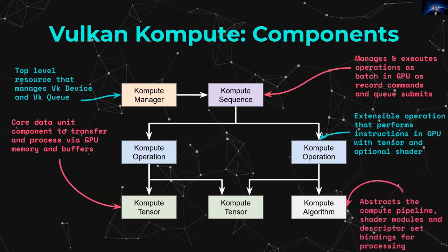Optionally, an operation can also have what in the Kompute world is referred to as an algorithm. An algorithm abstracts the concept of the Vulkan pipeline, the descriptor sets, and the specific shader code, allowing you to specify: run this code on the GPU with these specific data structures in this specific way. There is an almost one-to-one mapping between Kompute components and Vulkan components, which is explicit to reduce ambiguity.